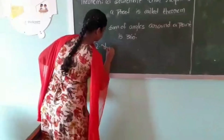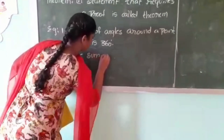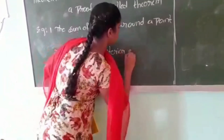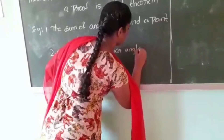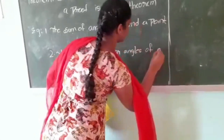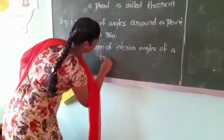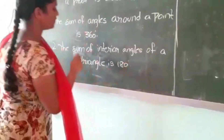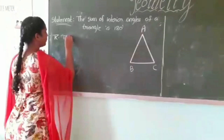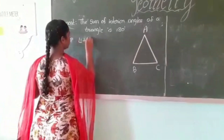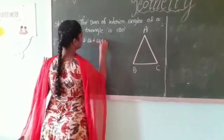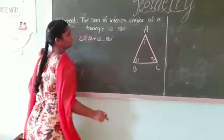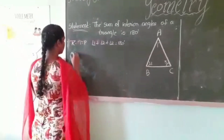The sum of interior angles of a triangle is 180 degrees. Angle 1 plus angle 2 plus angle 3 equals 180 degrees, where the angles are labeled 1, 2, and 3. Now let us see the proof for this.